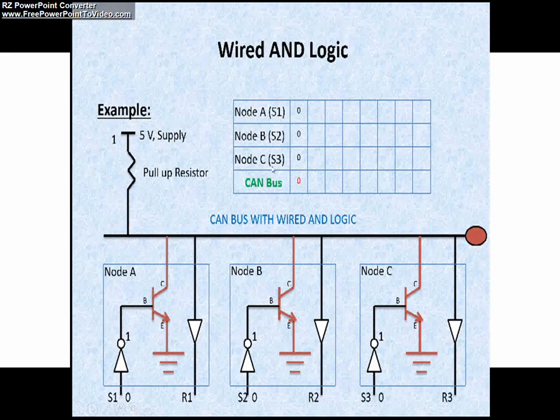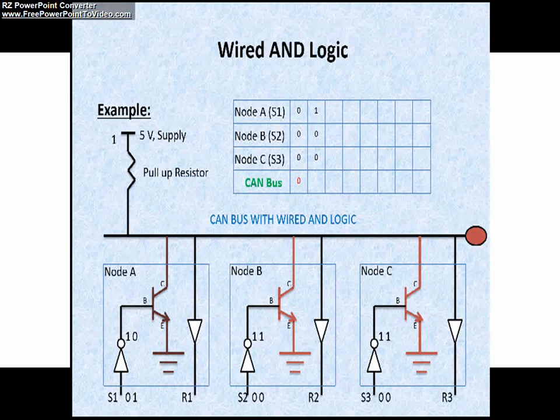The next example: node A is sending 1, and node 2 is sending 0, and node 3 is sending 0. You can see the inverted values. Since we are sending 1 here, we will be receiving 0 here. And the other two nodes, since we are sending 0, we will be getting 1. These two nodes will activate the transistor, meaning activating the switch, and this will not activate the switch or transistor.